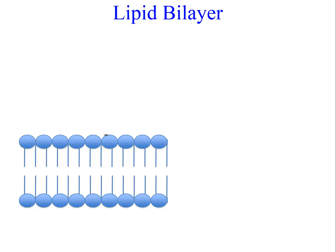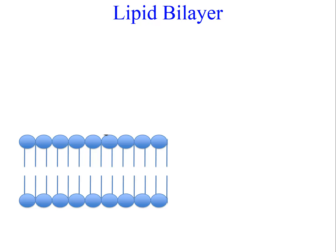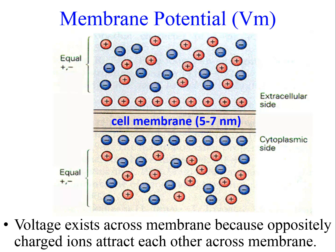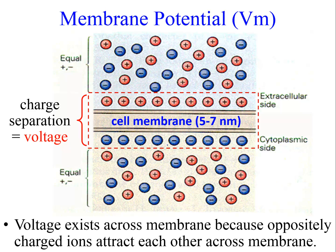There are two characteristics of the lipid bilayer important to the membrane potential. First, the lipid bilayer is impermeable to polar molecules. Ions, although small, are charged and consequently polar, so the lipid bilayer is impermeable to ions and they cannot cross the membrane unassisted. To allow ions to cross, cells have ion channels. Second, the lipid bilayer is also very thin — about 5 to 7 nanometers — meaning oppositely charged ions can attract each other across the thin membrane, creating a charge separation, or voltage, across the cell membrane.